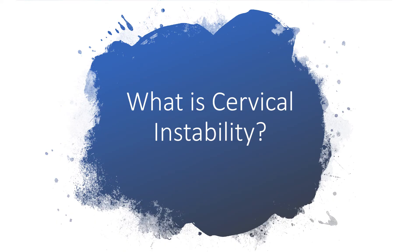So what is cervical instability? Cervical instability is defined as disruption or damage to the ligaments that support the cervical spine, and as a result it creates some extra stress on the surrounding structures such as the facet joints, intervertebral discs, as well as the nerves as they exit the spine.